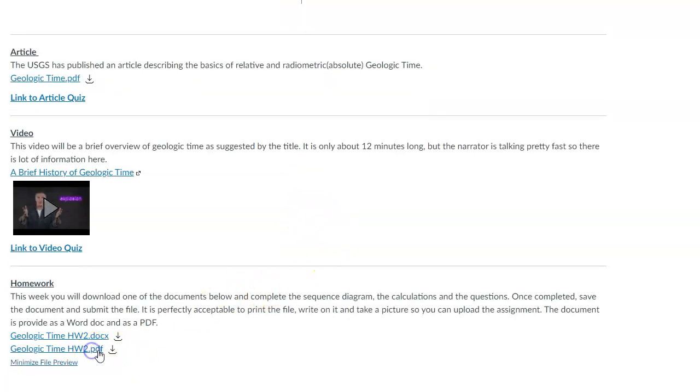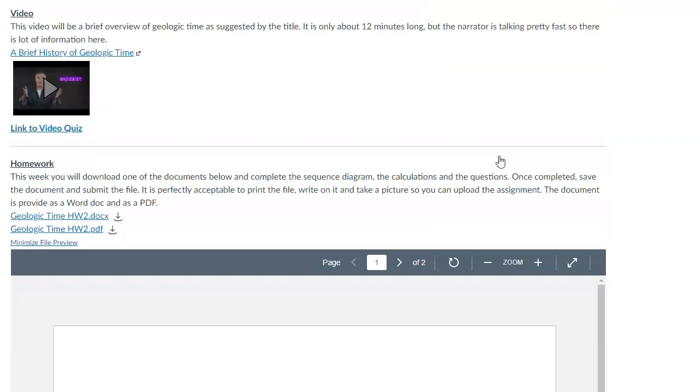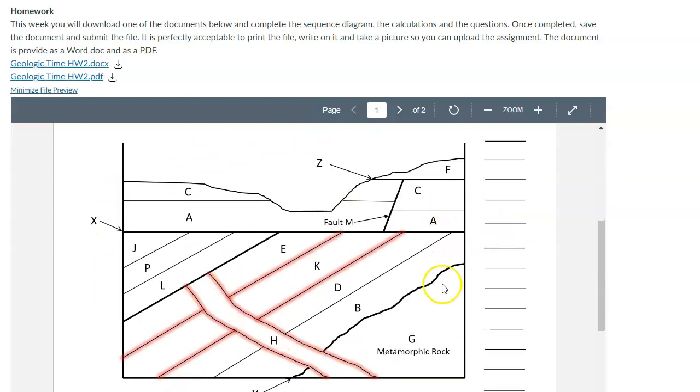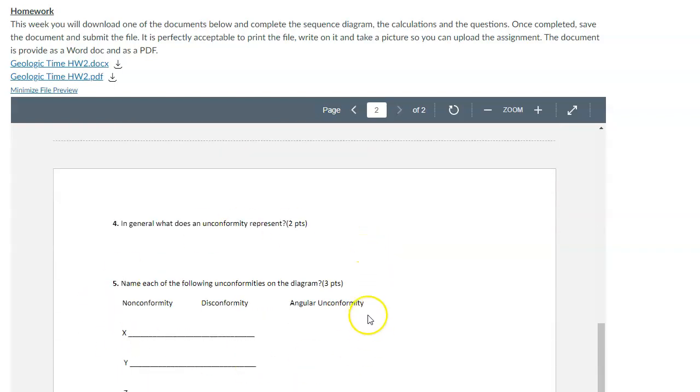For the homework, it's just a combination of both absolute and relative age dating stuff. Once again, it's in a PDF or a Word document format, so you can type on it or you can just write your answers on another document and send that to me. Whatever works best for you. But here's the homework. There's an absolute age date question, there's a relative age date kind of puzzle to figure out, and then some questions here.